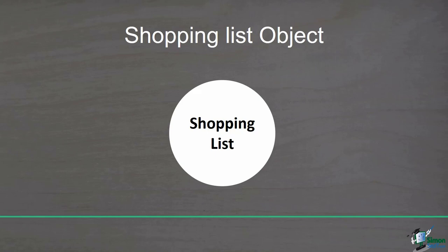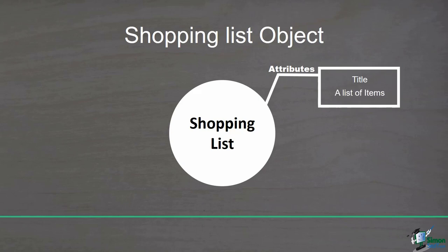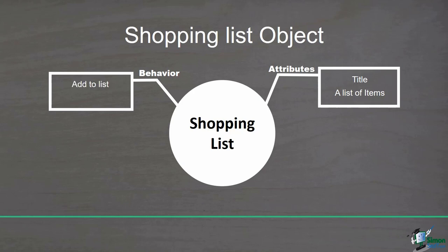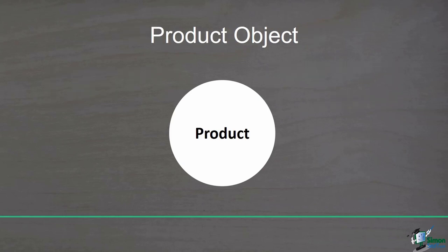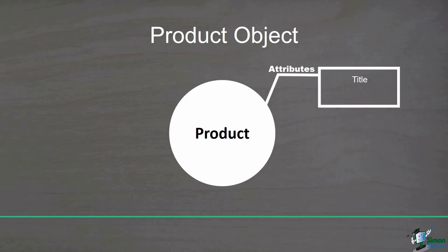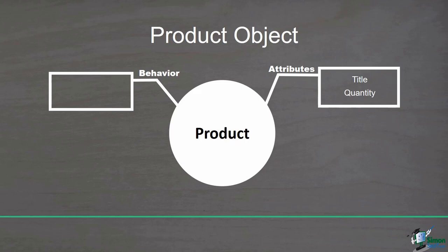In this example, suppose that the shopping list has a title and a set of products. At least we should be able to add a product to a shopping list, and also we want to see the products in a shopping list. But what is the product here? We can consider the product as another object. A product has a title and quantity. And we can change the quantity for a product, so it has just one method. As you see in this example, we have a shopping list object in which there is another object named product. This video will show you how to define objects that use other objects.